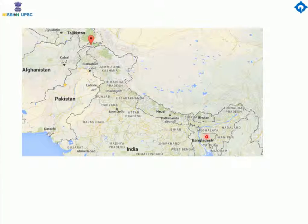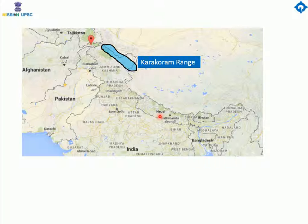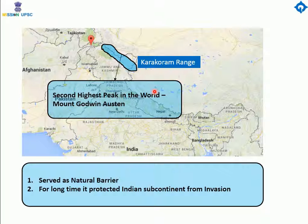In the north of Kashmir is the Karakoram region. In the north of the Karakoram region, the second highest peak in the world, Mount Godwin Austin, is situated. This part of the Himalayas and its passes are high and snow-covered in winter. It acts as a natural wall and protects the country against the cold Arctic winds blowing from Siberia through Central Asia, keeping the climate of northern India fairly warm throughout the year.